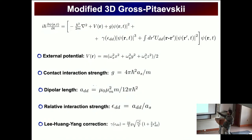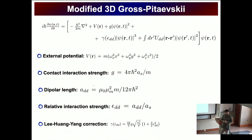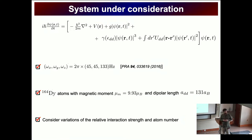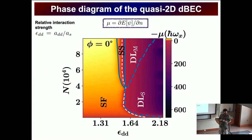To describe the ground state and dynamics, I rely on the three-dimensional extended Gross-Pitaevskii equation: the kinetic term, the 3D harmonic trap, the s-wave interactions, the first-order LHY quantum correction, and the anisotropic dipole-dipole interaction potential. I use trap frequencies taken from experiment, dysprosium atoms with their specific magnetic moment and dipolar length, and vary the relative interaction strength ε_dd, which quantifies the ratio of DDI to s-wave interactions.